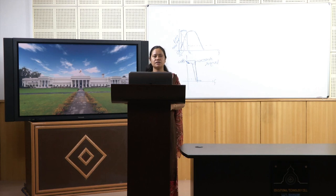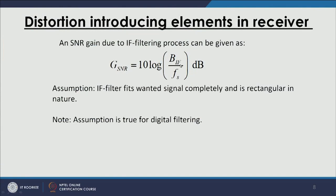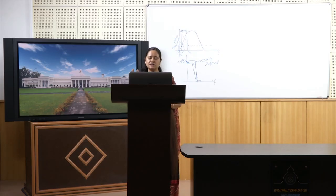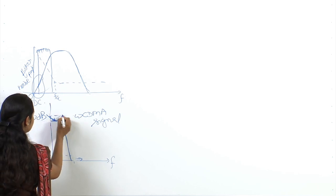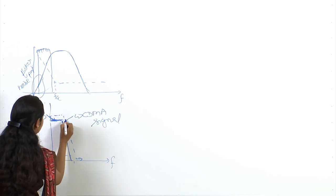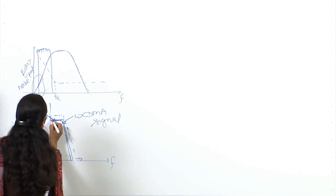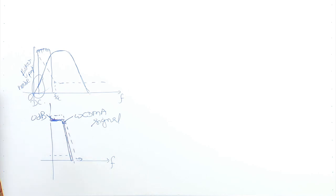The overall SNR gain due to the IF filtering process is given by a formula involving BIF, the IF filter bandwidth, and Fs, the sampling frequency. This expression assumes that the IF filter fits the signal completely and is rectangular in nature — covering only that portion and no other. In the digital domain, such a sharp rectangular filter is achievable as post-processing, for example applied exactly over a WCDMA signal bandwidth.